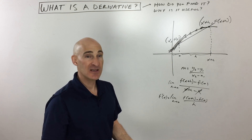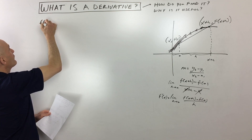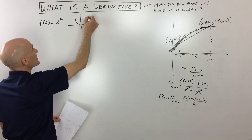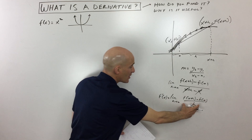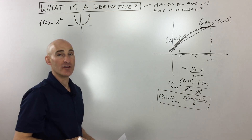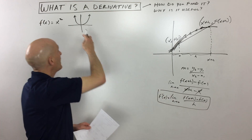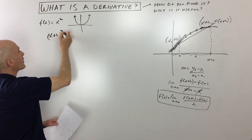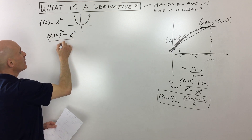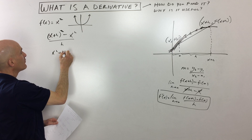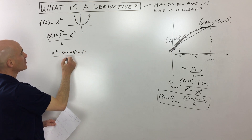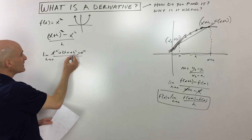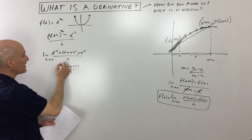Let's get into a basic example. Say your function is f of x equals x squared — we know that's just a parabola. What we're going to do is use our difference quotient to find the derivative, which is a formula for the slope of the tangent line at any point along the graph. We put in x plus h squared minus f of x, which is x squared, all divided by h. If we simplify, we get x squared plus 2hx plus h squared minus x squared, all divided by h. Notice the x squareds cancel, and then we can factor out an h, which gives us 2x plus h, all divided by h. Those h's cancel.